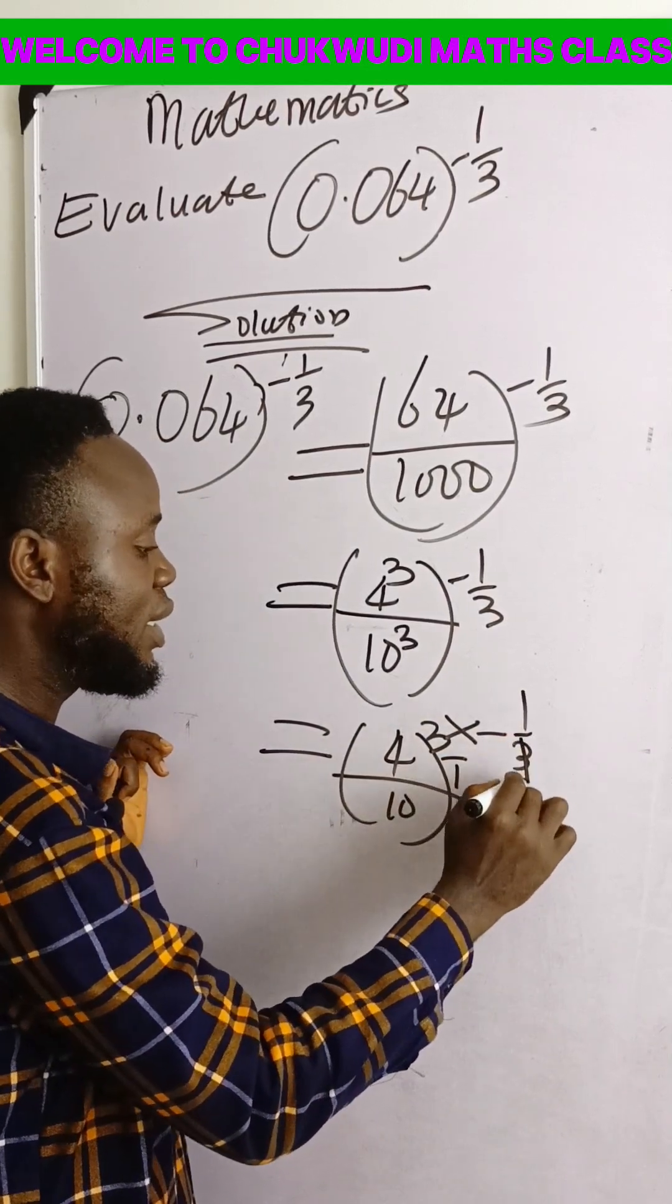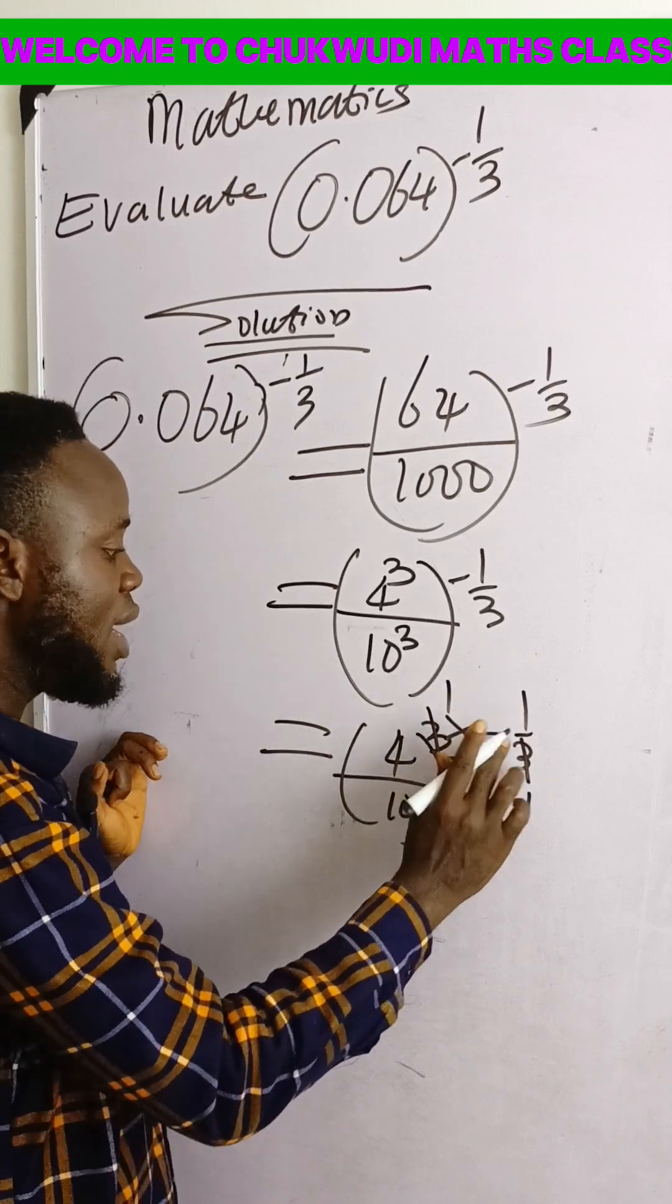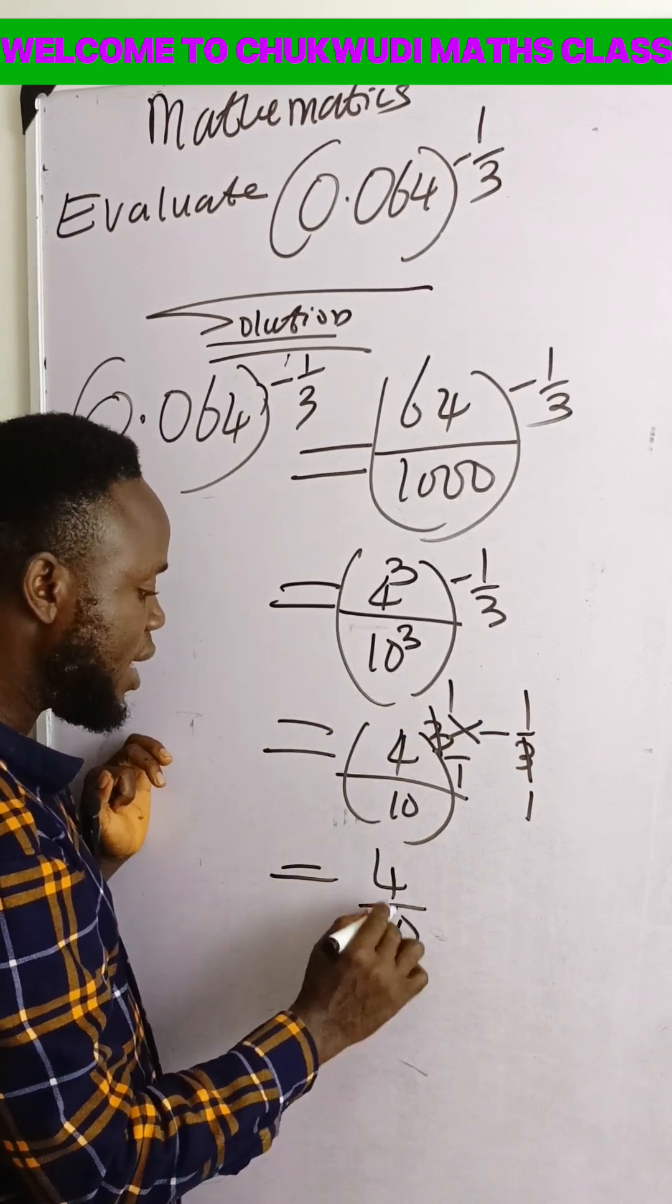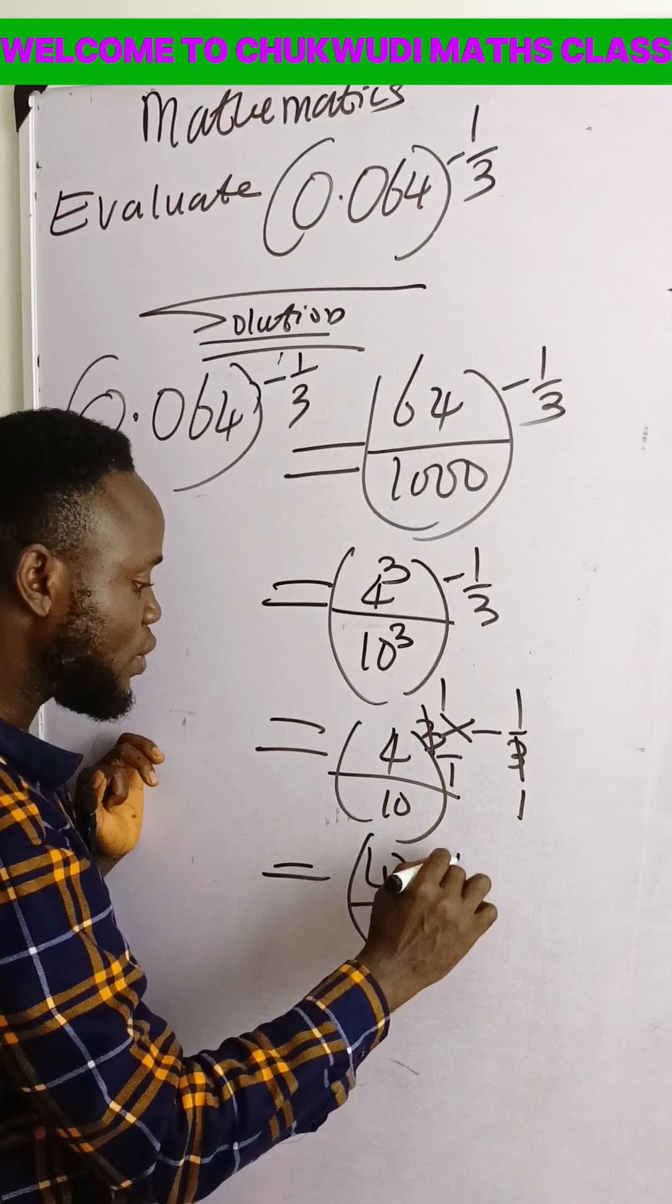Let us take this one as over 1, so that 3 will divide 3 up here, and we are left only with 4 over 10 raised to the power of minus 1.